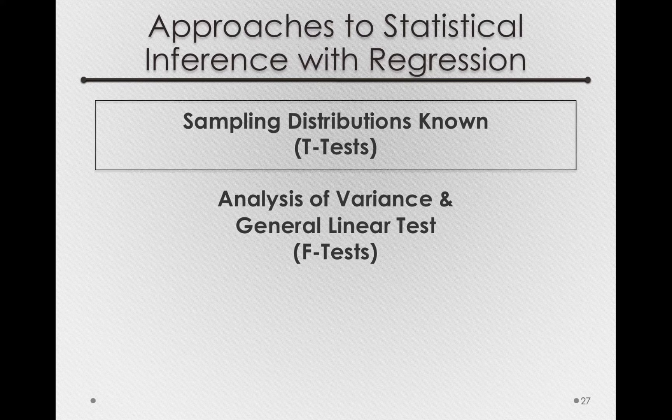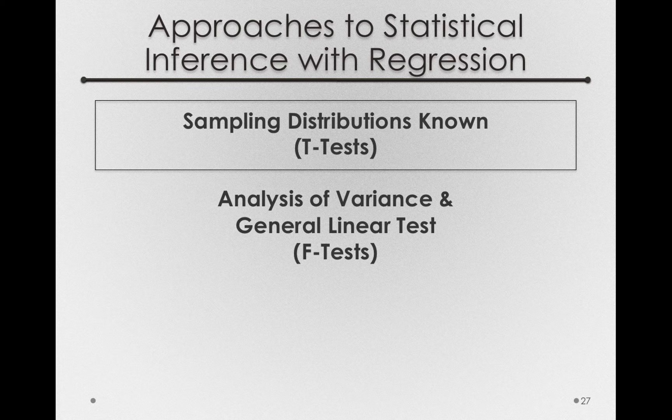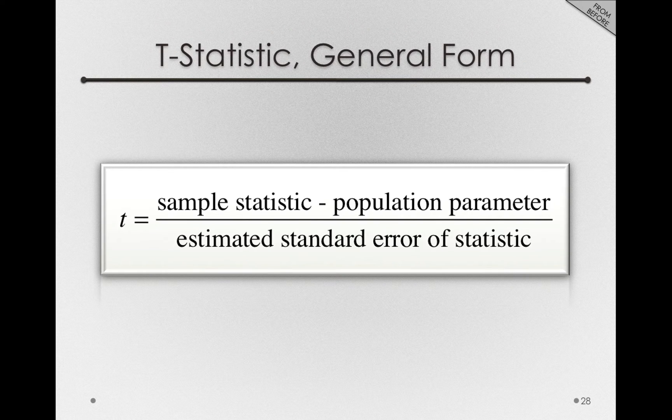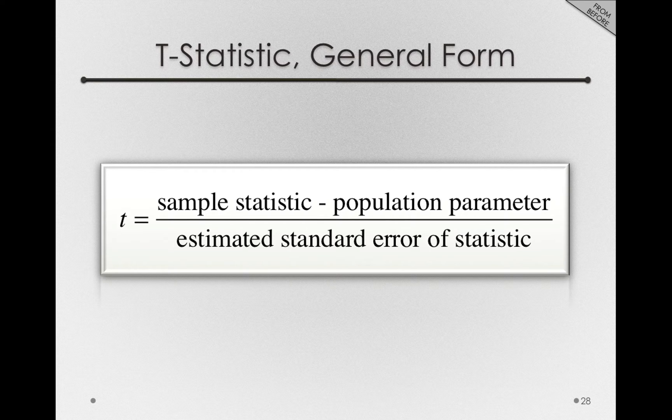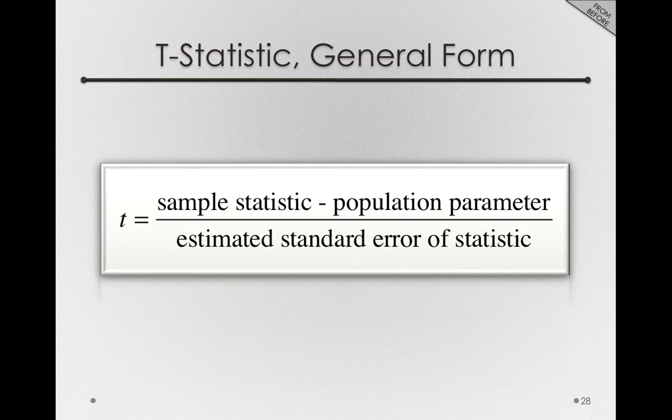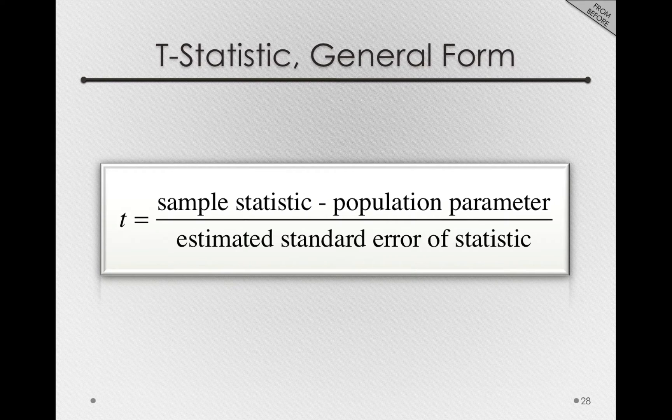Let's start by seeing how we can use t-tests to actually make tests of the parameters in our regression model. Remember that the t-statistic has a general form. A t-statistic is simply a sample statistic minus the population parameter if the null hypothesis is true, divided by the estimated standard error of that statistic.